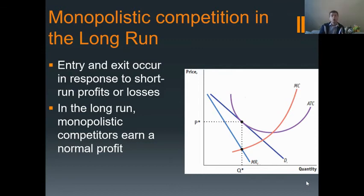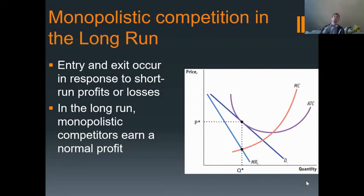If firms were earning losses — if ATC was above the price — then firms will exit the market in the long run. When they exit the market in the long run, demand and marginal revenue will shift to the right for individual firms because they increase their market share. If they increase their market share, demand and marginal revenue shifts right until you get to the long run equilibrium point.